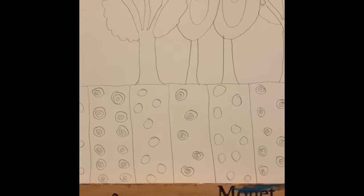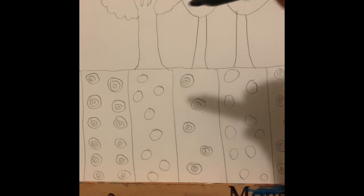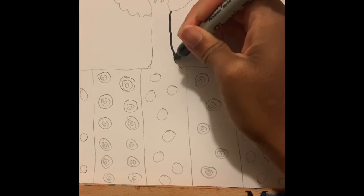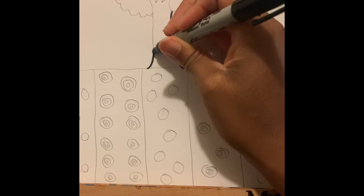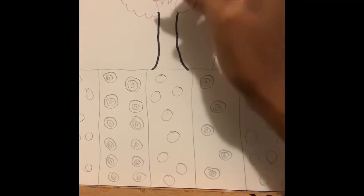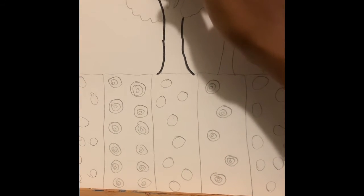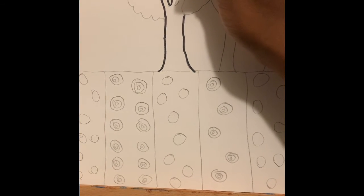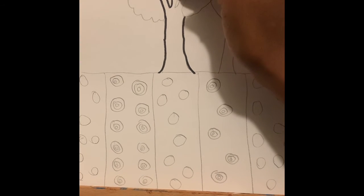So the next thing you want to do is start outlining with a sharpie. So just trace over any lines that you made with pencil. Now you want to take your time. Don't rush through this process.